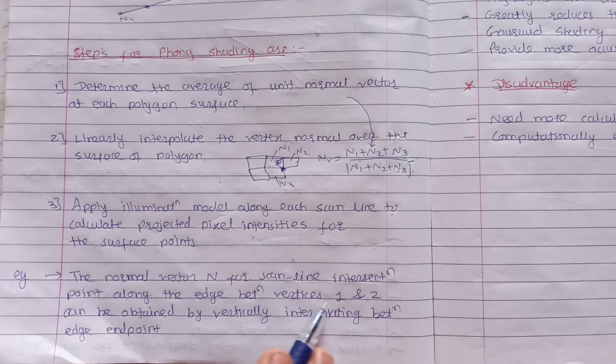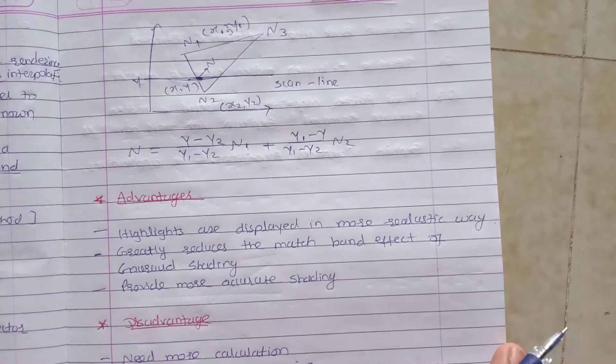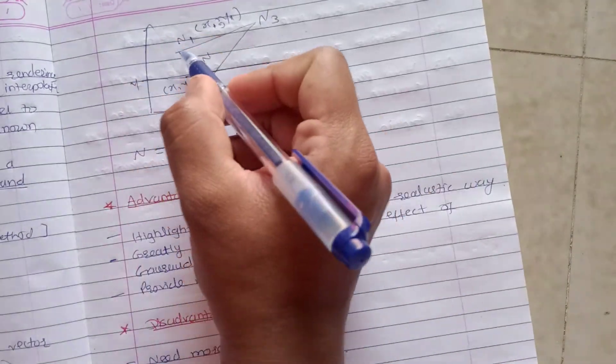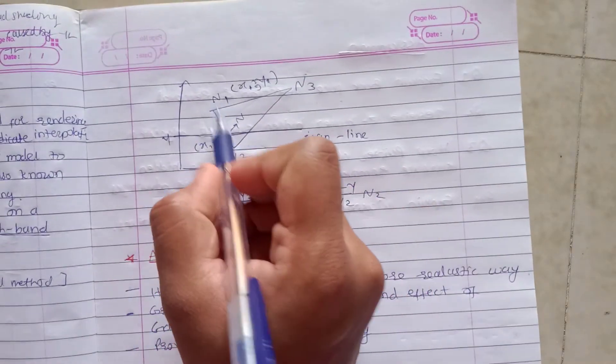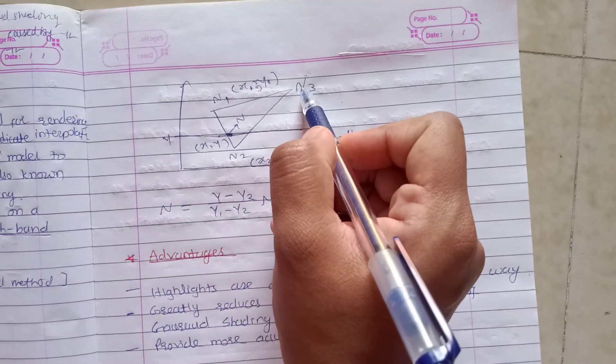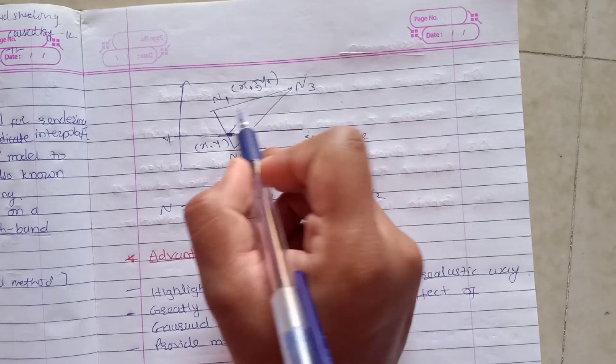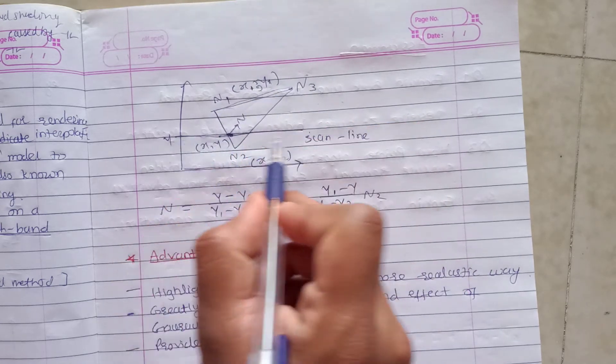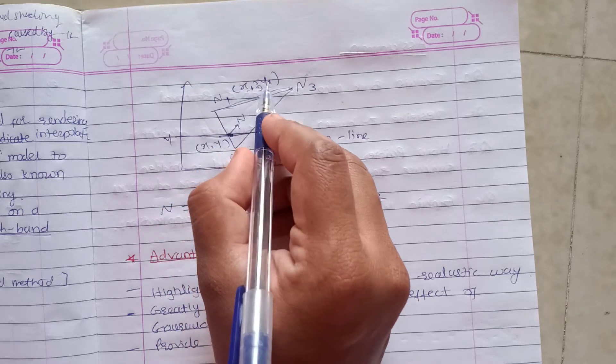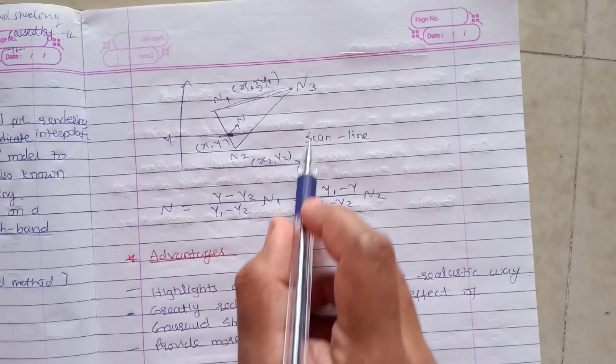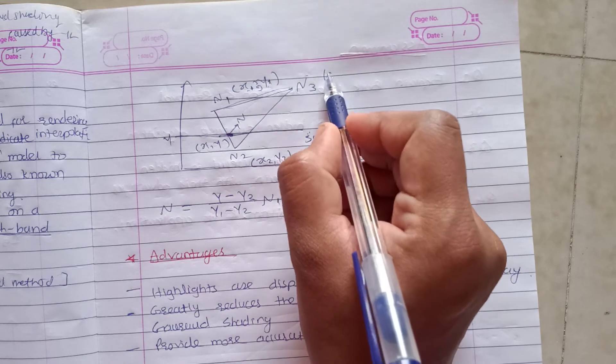Suppose this is the polygon with n1, n2, n3 as the endpoints, and this is the scan line. The coordinates are (x1, y1) for n1, (x2, y2) for n2, and (x3, y3) for n3. The scan line intersects the edges here, and we need to find the normal vector value at these intersection points.